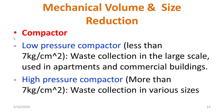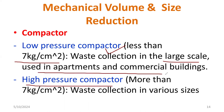Compactors can be divided into two types: low pressure compactor and high pressure compactor, based on pressure level. If the pressure gauge reads less than 7 kilograms per centimeter square, the device is a low pressure compactor, mainly used for large-scale applications like apartments and commercial buildings. If the pressure is more than 7 kilograms per centimeter square, it is a high pressure compactor, used for waste collection in various sizes.